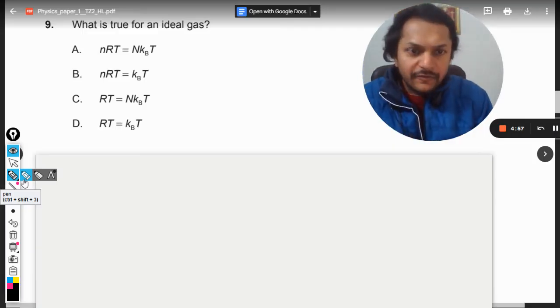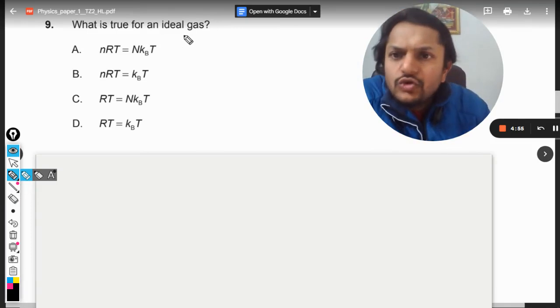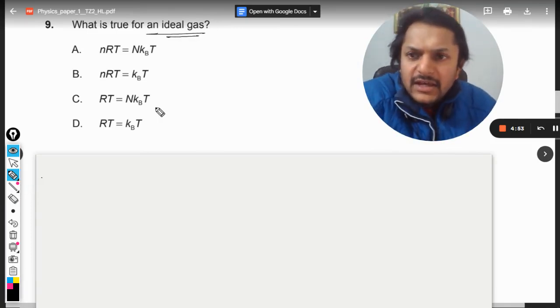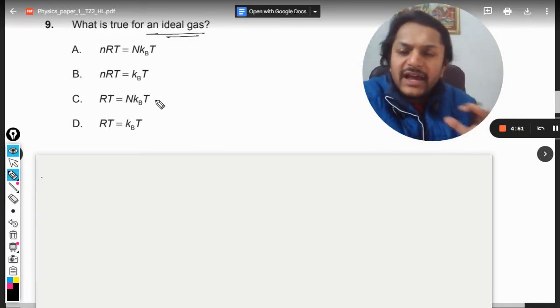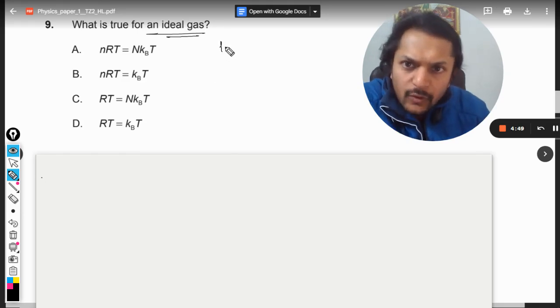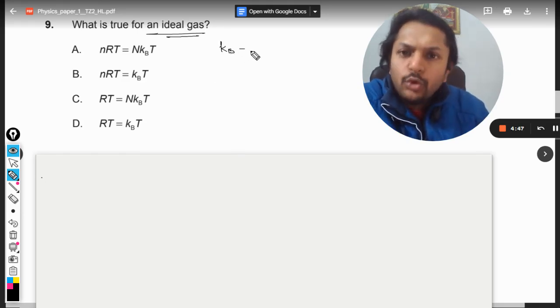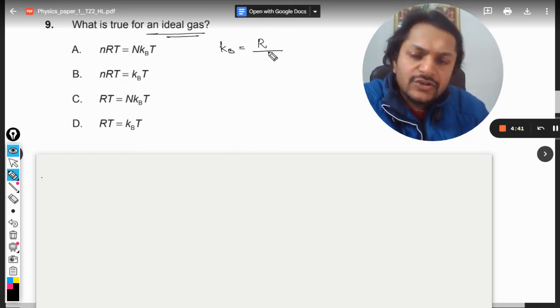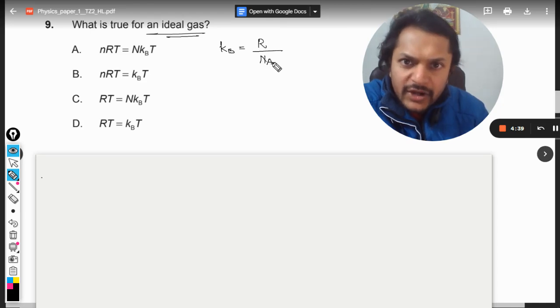Okay dear students, so what are we going to do in this question? What is true for an ideal gas? The symbols have their usual meaning. Now what is this KB? KB is Boltzmann constant. And what is the definition of Boltzmann constant? It is the universal gas constant divided by the Avogadro number.